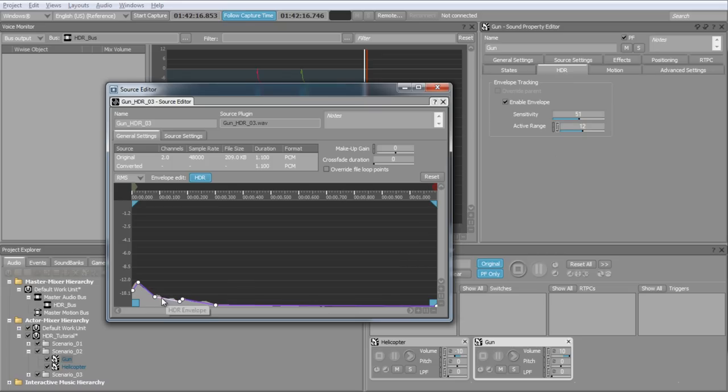You can also edit the envelope manually by adding, deleting, or moving points in the graph. This is helpful sometimes when a certain portion of the sound doesn't drive the HDR window exactly as you would like it to.